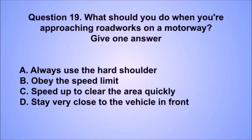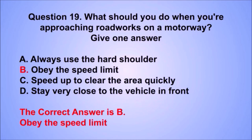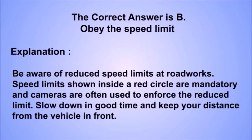Question 19. What should you do when approaching roadworks on a motorway? The correct answer is B: Obey the speed limit. Be aware of reduced speed limits at roadworks. Speed limits shown inside a red circle are mandatory and cameras are often used to enforce the reduced limit. Slow down in good time and keep your distance from the vehicle in front.